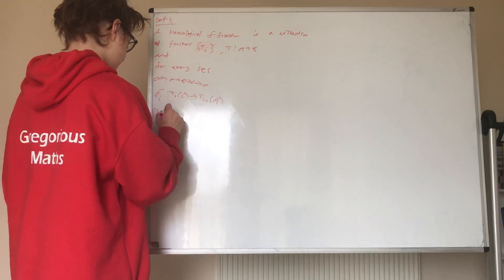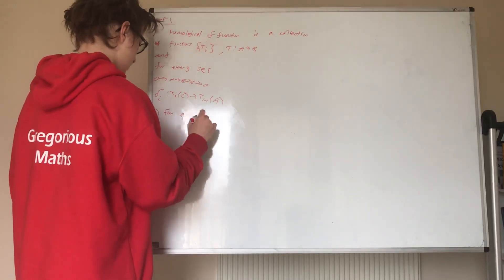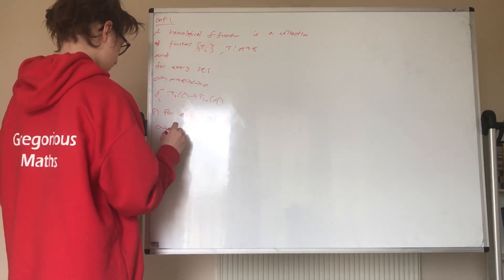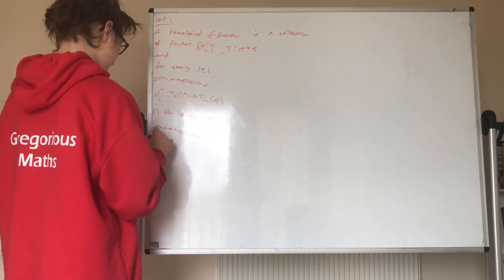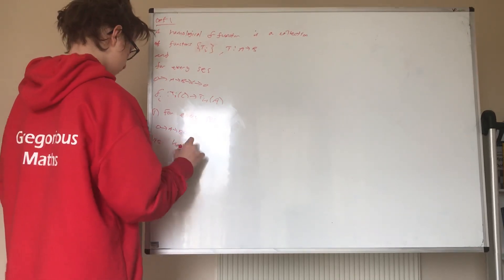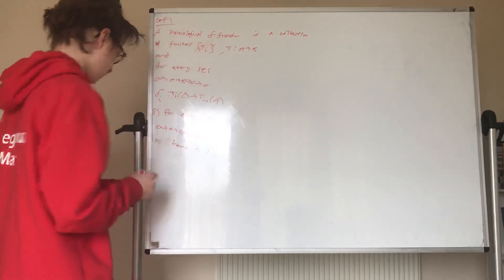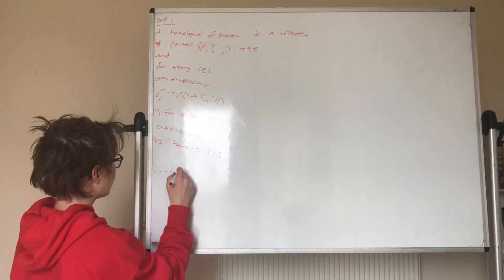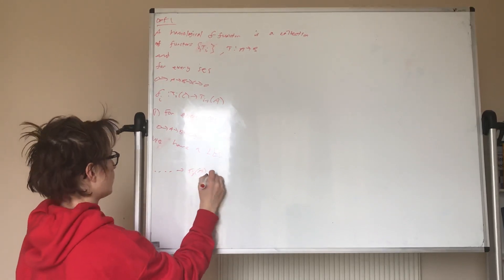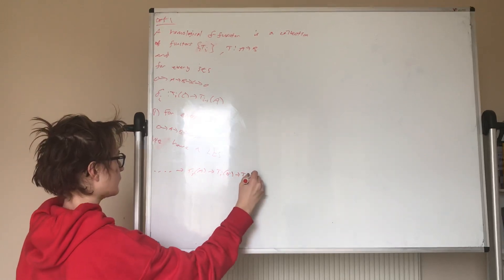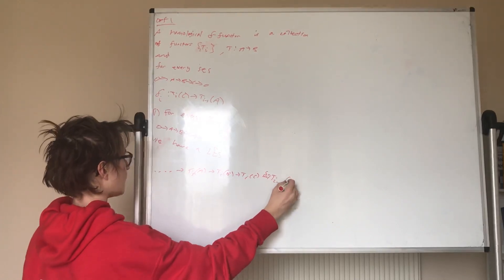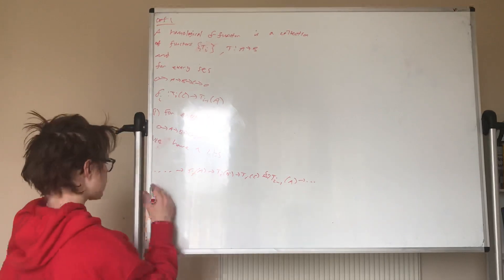One is that for every short exact sequence, we have a long exact sequence which goes to Ti of A, to Ti of B, to Ti of C, and then we go via delta i to Ti-1 of A, and so on.